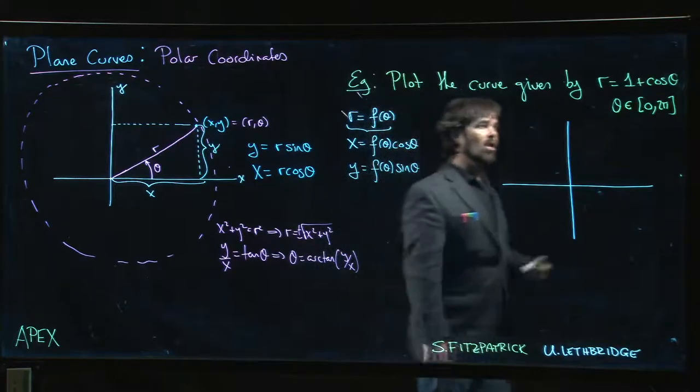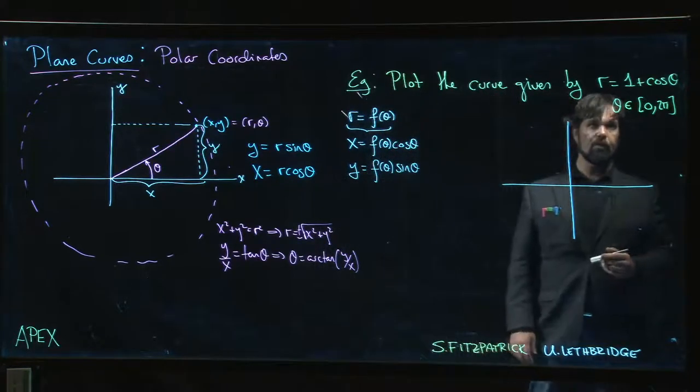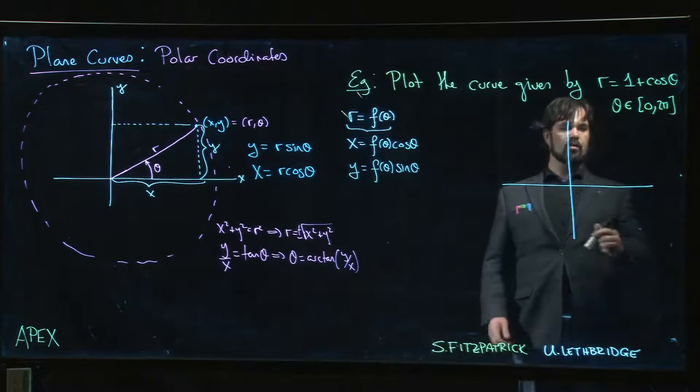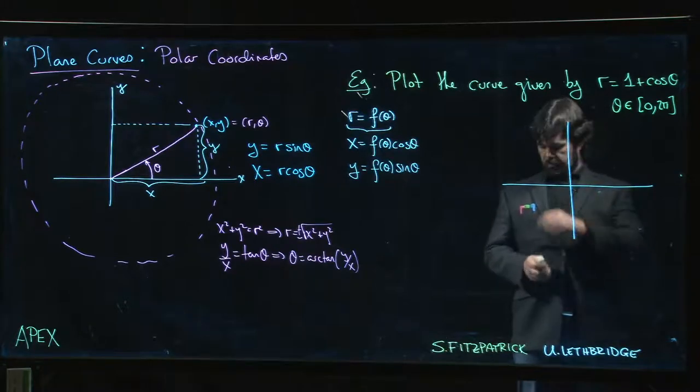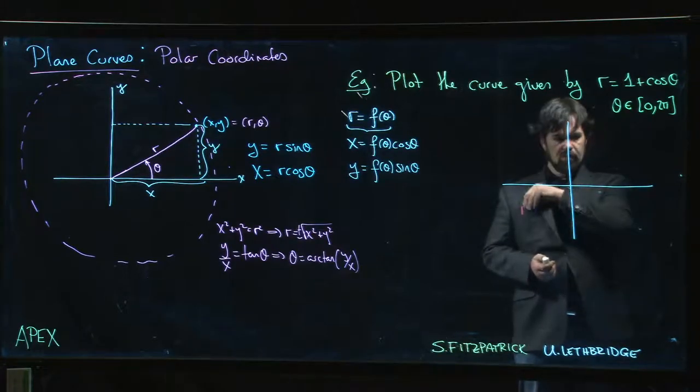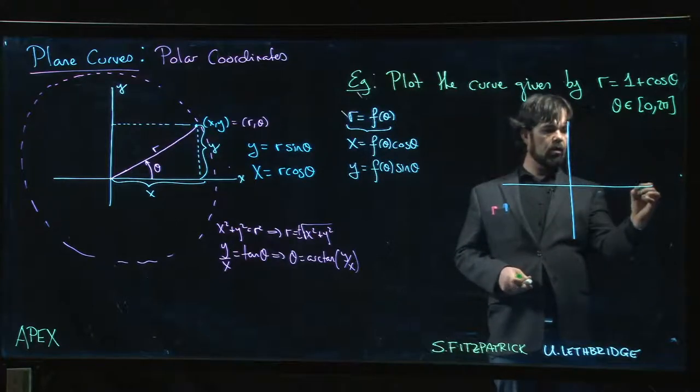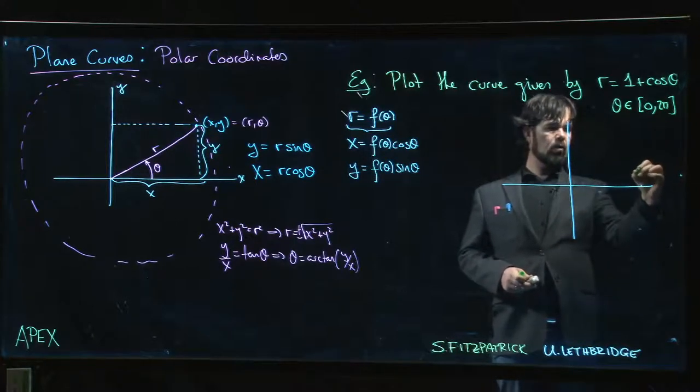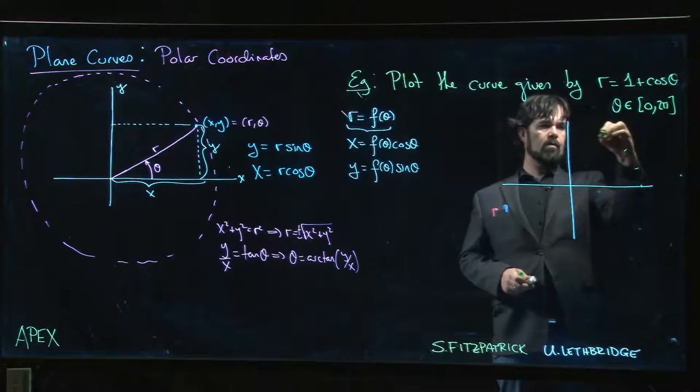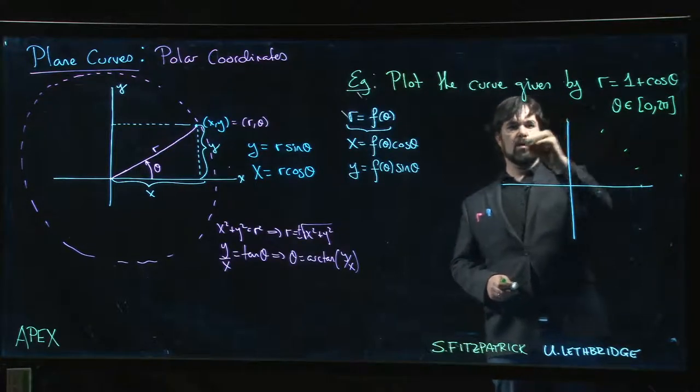Those spirograph curves are polar curves. So what you typically do is you kind of start at zero, and you say okay if theta is equal to zero we're over here and you work your way around pi over six, pi over four, pi over three, pi over two.